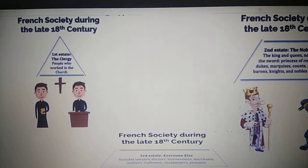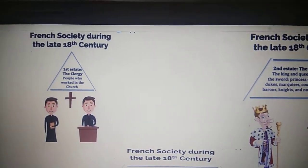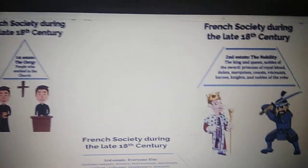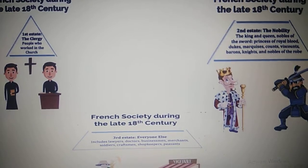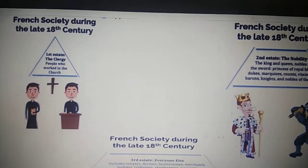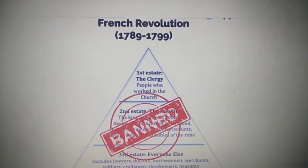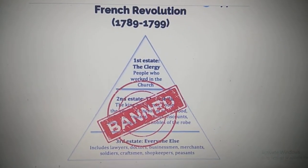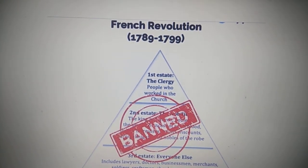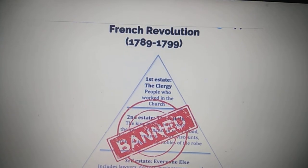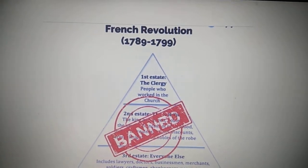So, the French society was divided into a hierarchy: the first state, the clergy; the second state, the nobility; and the third state, the commoners. With the French Revolution, which began in 1789 to 1799, we see a drastic change — the abolishment of this state system. It was abolished.